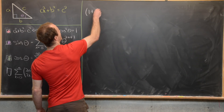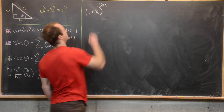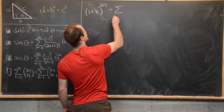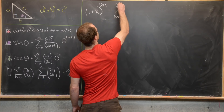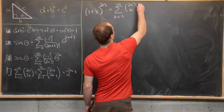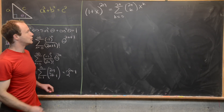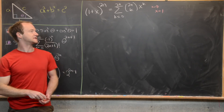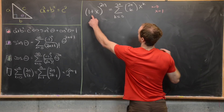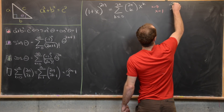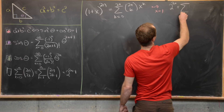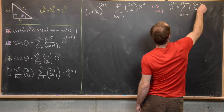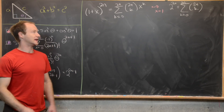To prove this, consider the binomial expansion of x plus one to the two n. By the definition of binomial coefficients, this is the sum as k goes from zero to two n of two n choose k times x to the k. Setting x equal to one gives two to the two n equals the sum as k goes from zero to two n of two n choose k.